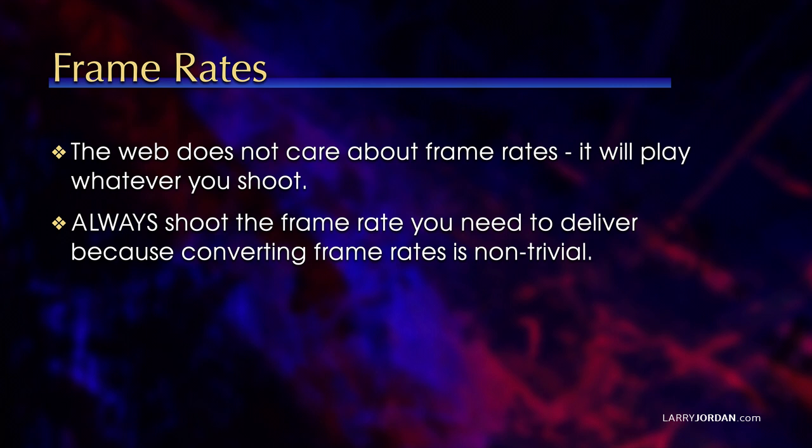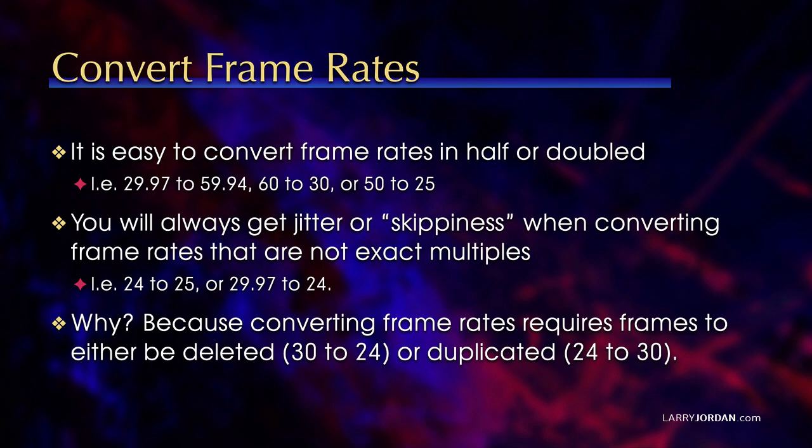If you're delivering a project where the frame rate is important — think broadcast, digital cinema — always shoot the frame rate you need to deliver, because converting frame rates is non-trivial. It's easy to convert frame rates that are half or double, for instance 29.97 to 59.94, or 60 to 30, or 50 to 25. That's easy because all we do is either double the frames or take every other frame away.